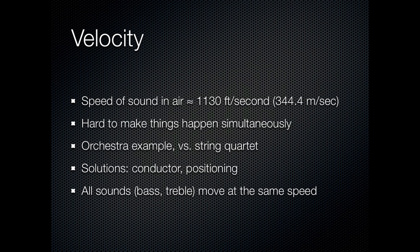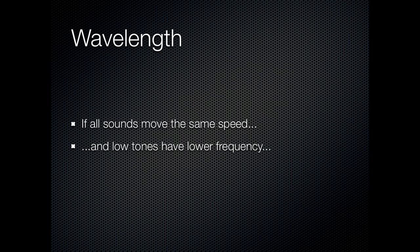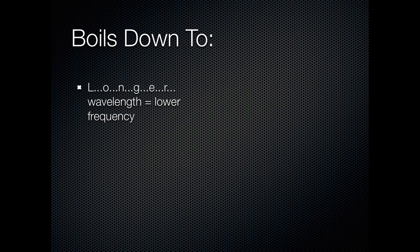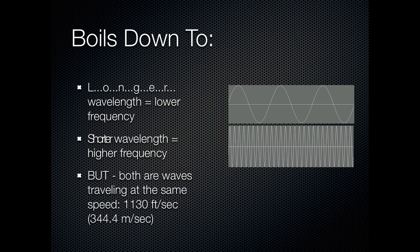All sounds move at the same speed regardless of their frequency, which links right in with the idea of wavelength. If all sounds are moving at the same speed and low tones have a lower frequency, the only way it works out is that lower sounds have longer waves. Longer wavelength is the same as having a lower frequency; a shorter wavelength makes the sound have a higher frequency — both traveling at 344 meters per second or about 1,130 feet per second. The frequency comes from the sound increasing and decreasing pressure at a faster or slower rate. Some people say bass waves take time to develop, but that's simply not true — if it were, you would not be able to hear any bass on headphones, since the drivers are only a millimeter or two from your ears.